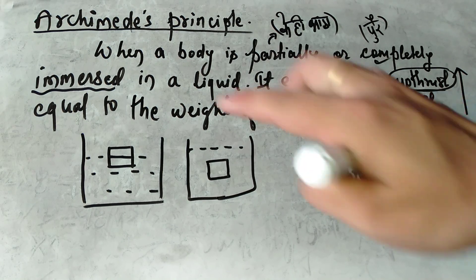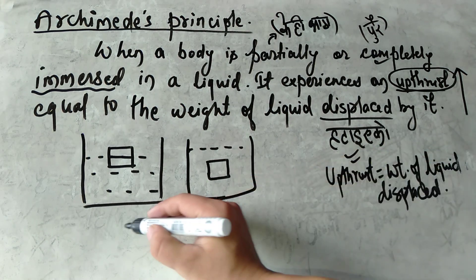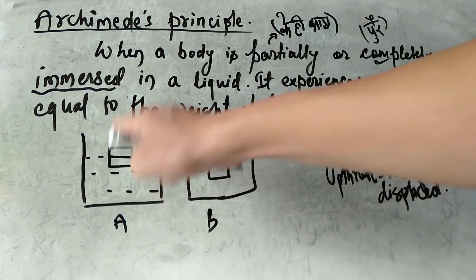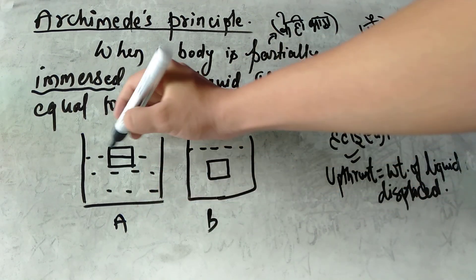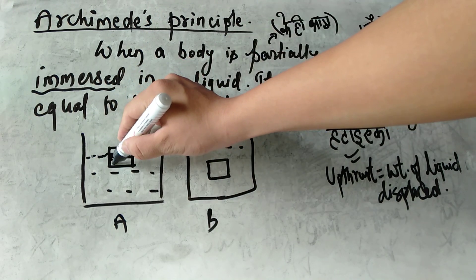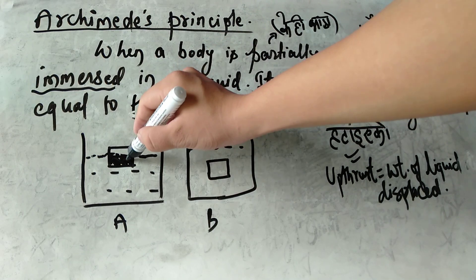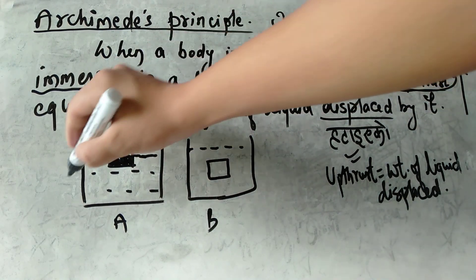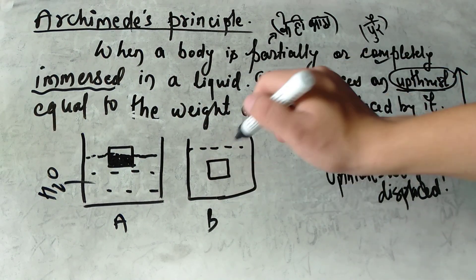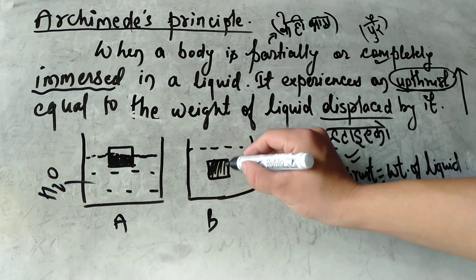Let us look at these two figures. Let us suppose this is case A and case B. Case A is where the whole object is partially immersed — it is partially submerged. This object is partially made — partially immersed in the water.